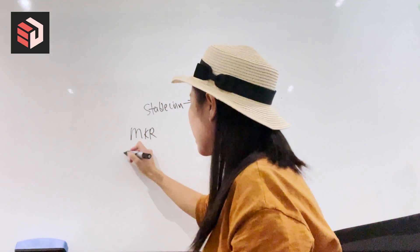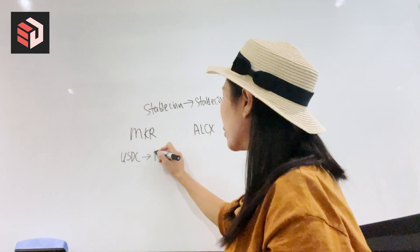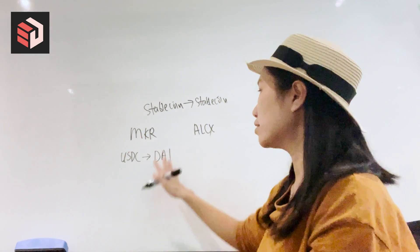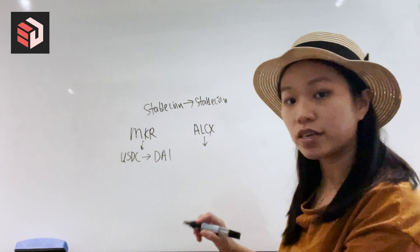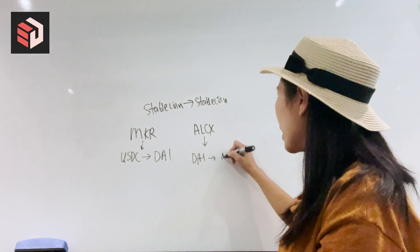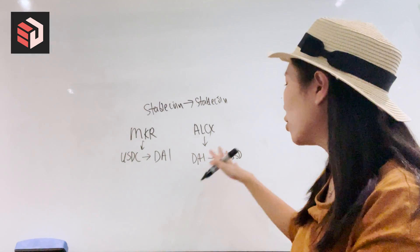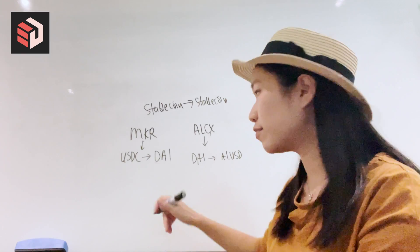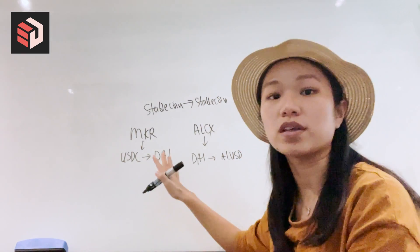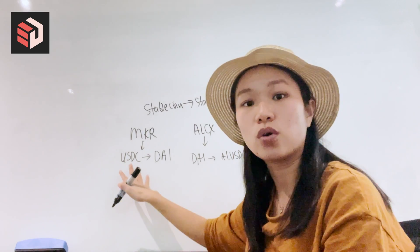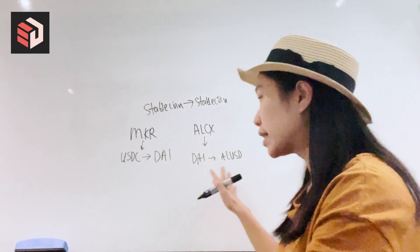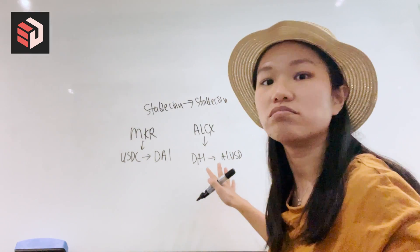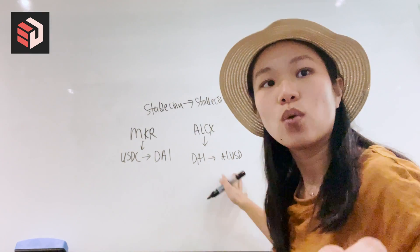With MakerDAO, you give USDC stablecoin and you get DAI stablecoin. That's Maker's mechanism. With Alchemix, you give them DAI and you get LUSD — also a stablecoin. Stablecoin to get stablecoin. Now what is the difference? They're the same thing, right? Both are stablecoins. If the market says DAI is worth $0.90 or $1.10, it doesn't matter — you can get back your USDC; they always value it one to one. Same here: if LUSD is $0.90 or $1.10, you can always get back DAI one to one.